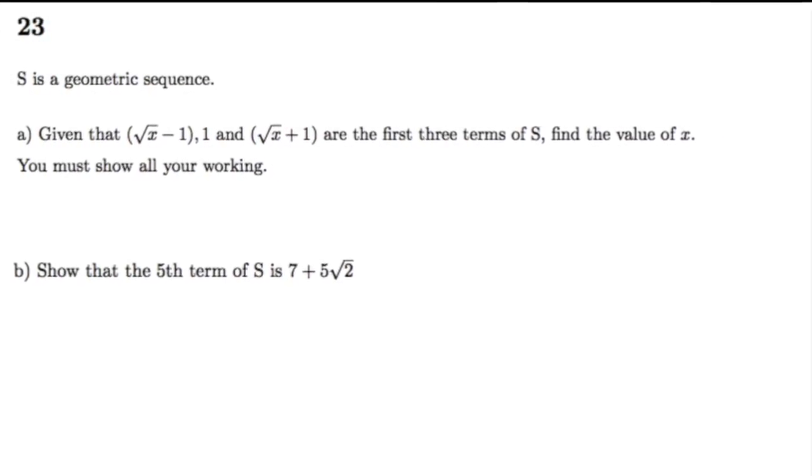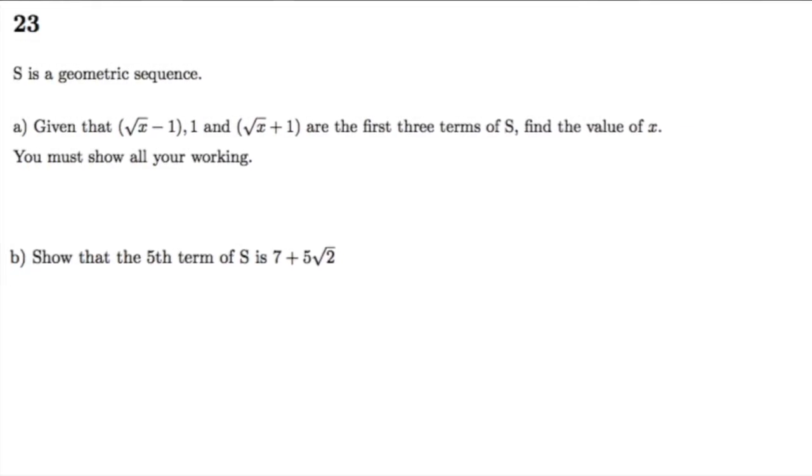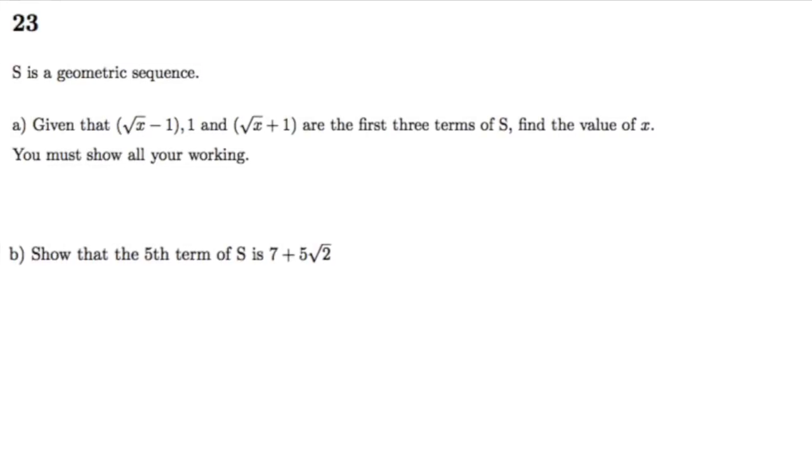The 6th of November was the first calculator paper of the resits and question 23 involved geometric sequences and surds, both previously A star topics.